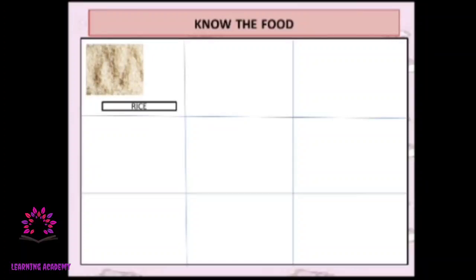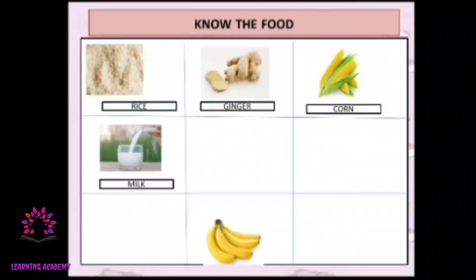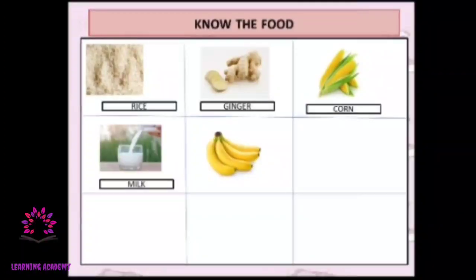Next we'll learn to identify food items. What is this? This is called rice — this is raw rice. Out of raw rice, your mom prepares cooked rice every day. This is called ginger; for your curry you need to add a little ginger. This is water. This is called corn. This is milk. What is this? This is a fruit — banana.